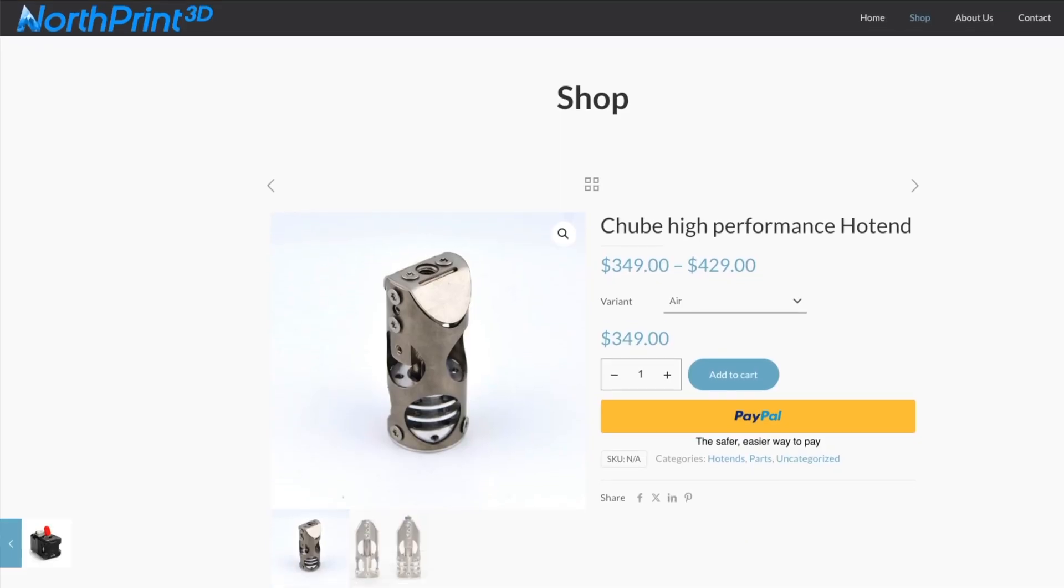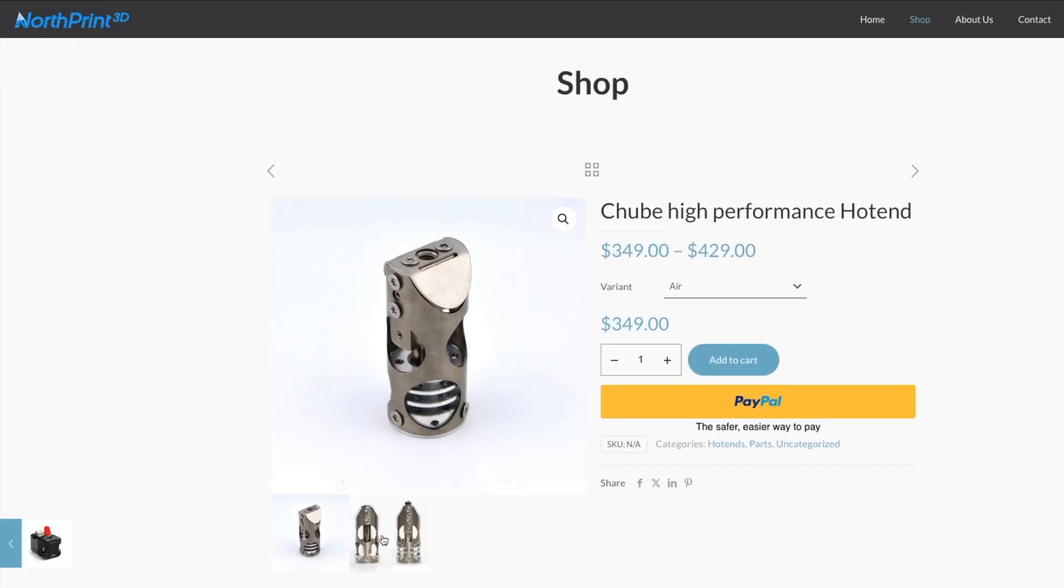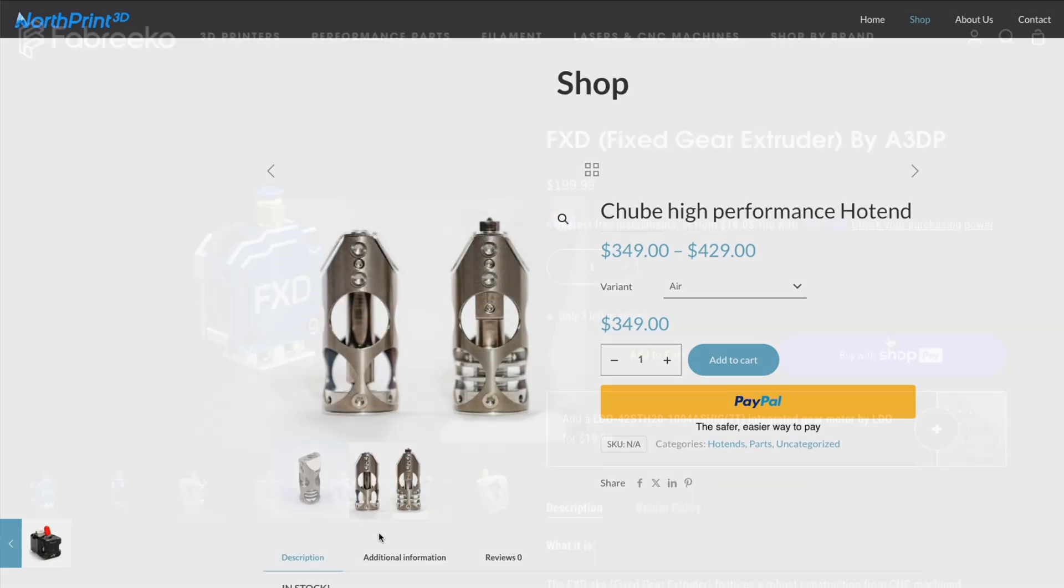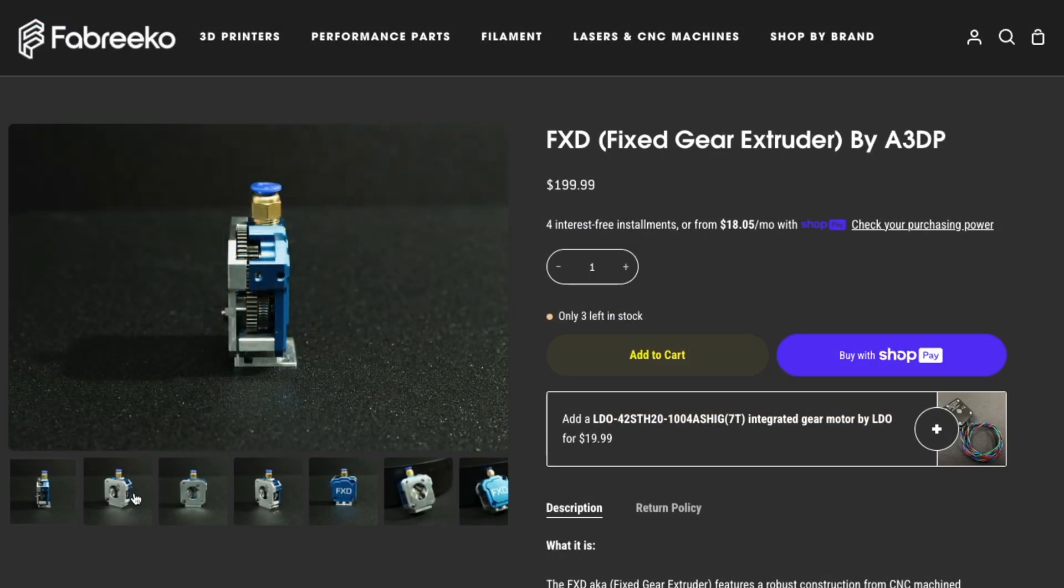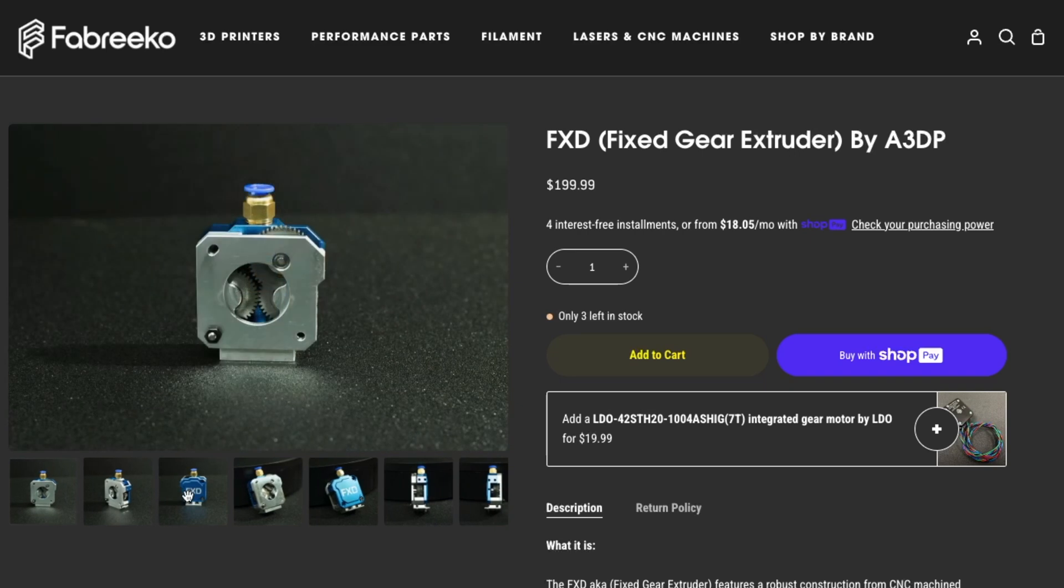Last April, at Rocky Mountain RepRap Fest, Northprint 3D sent me home with a tube hotend, and Fabrico gave me an FXD extruder from Advanced 3D Printing to do some testing with.